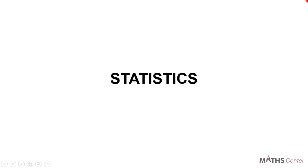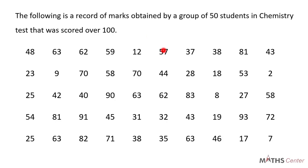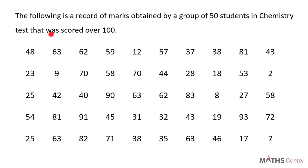Welcome back. We are still on the topic statistics. In the previous video, we solved a question on drawing a cumulative frequency table and curve for a given data. In this video we are going to solve another question. The question is: the following is a record of marks obtained by a group of 50 students in a chemistry test that was scored over 100.